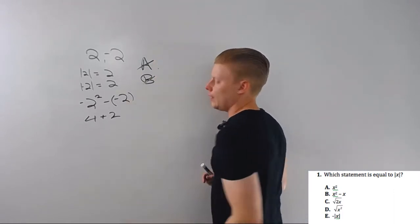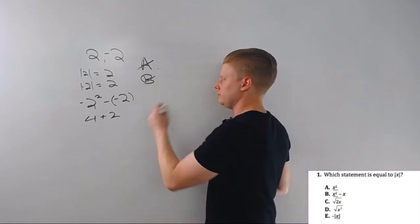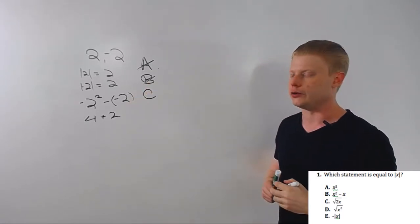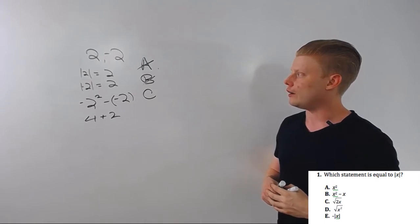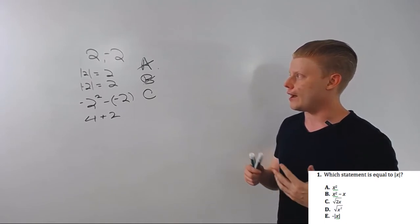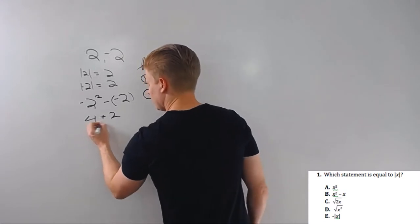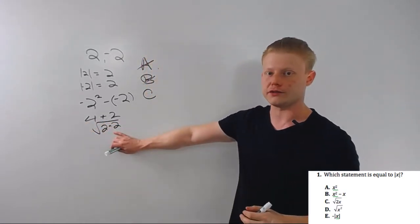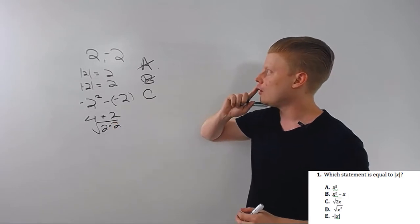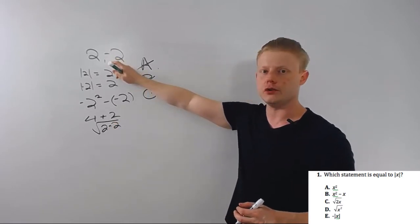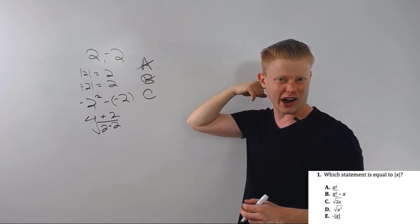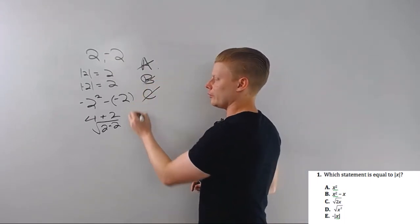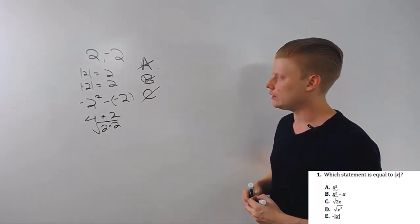Once your numbers get bigger the square is going to get bigger than the difference, so that one's out. Now let's look at C: square root of two x. Well this is another one that's tailored to the two. If I have two times two, well that's four, square root of that is two, that works for positive two. But with negative two it doesn't because then I have square root of negative four.